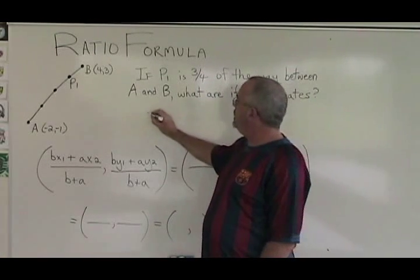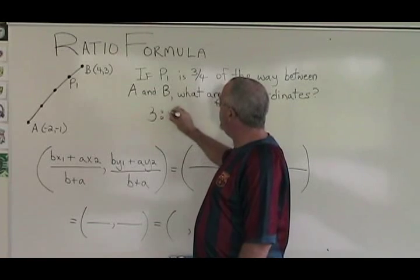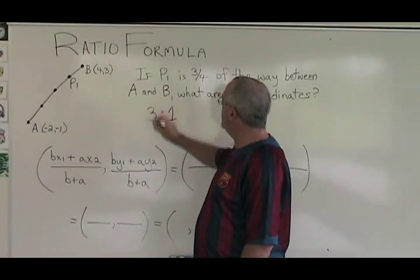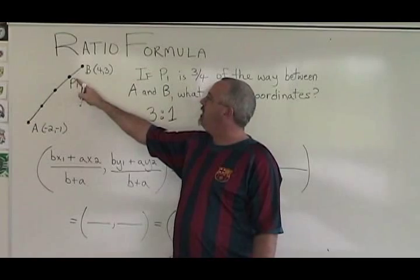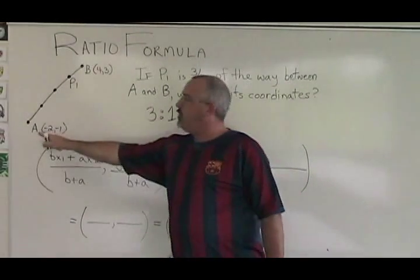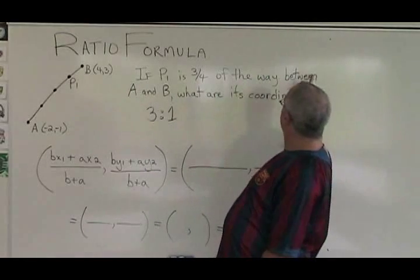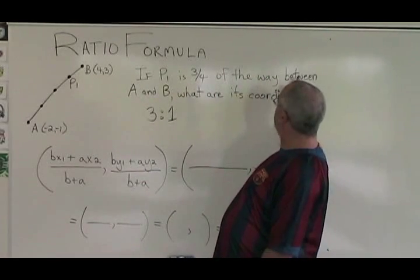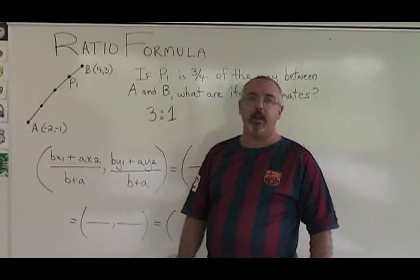That means there is a three to one ratio between the distance already covered and the distance still to cover. Remember, we have to start at point A because the wording of the problem is saying between A and B, starting at A, ending at B.